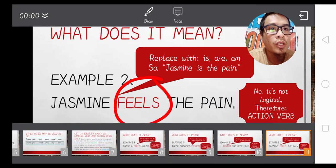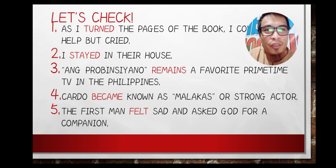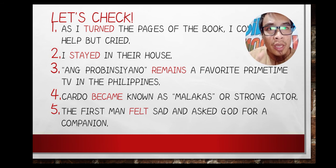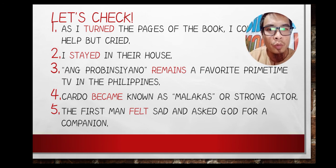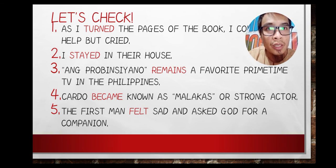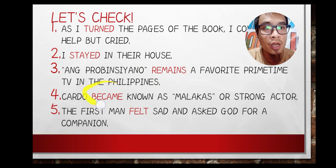Now, the exciting part — let's check! You can pause the video and try to answer. Apply the technique to identify whether the colored verb in each sentence is an action verb or a linking verb by replacing it with 'is' or 'are.'